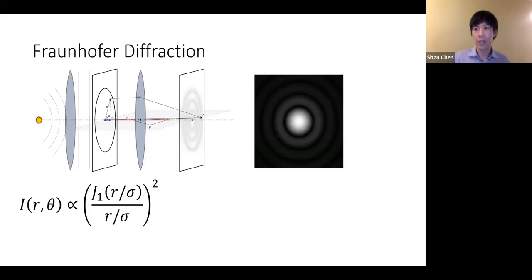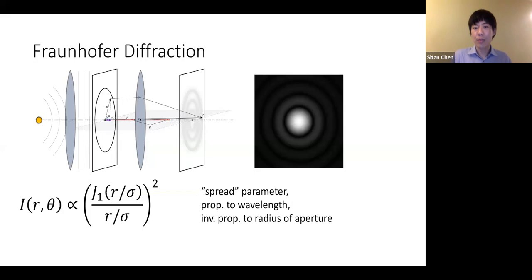Denoting the intensity at a point with polar coordinates (r, θ), it turns out it's proportional to the square of the ratio of the Bessel function of the first kind of order 1 to r, with a scaling parameter sigma — which I'll call the spread parameter. You can think of it like the standard deviation of a Gaussian. The spread parameter is proportional to the wavelength and, more importantly, inversely proportional to the radius of the aperture.